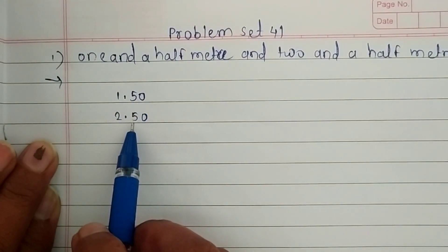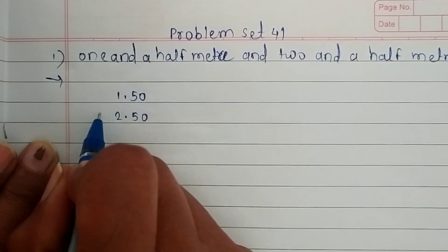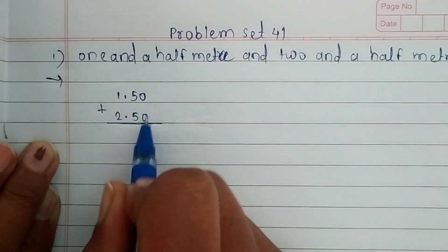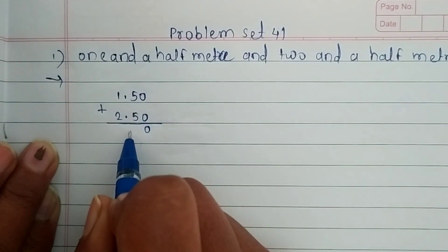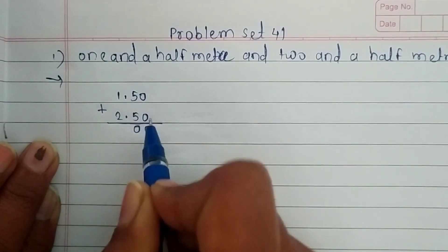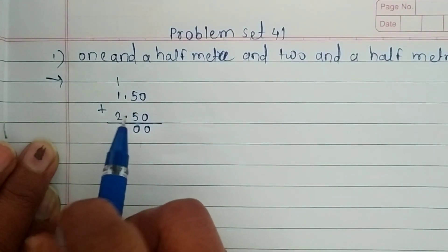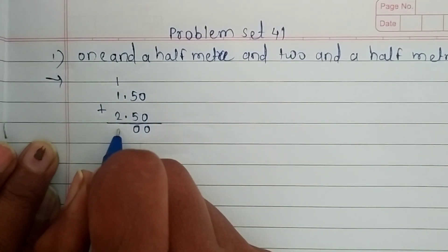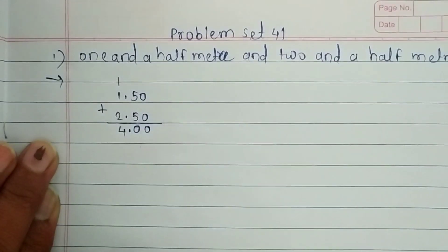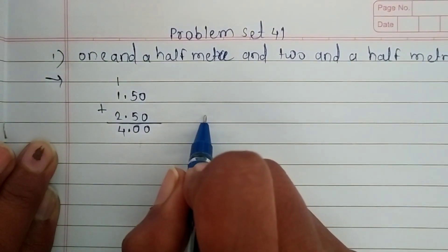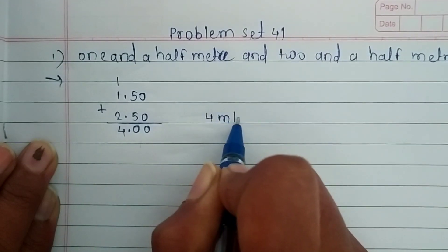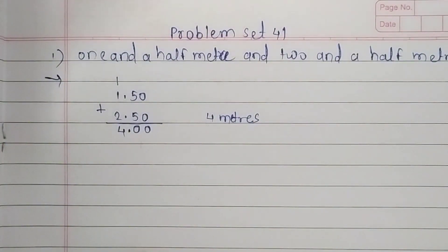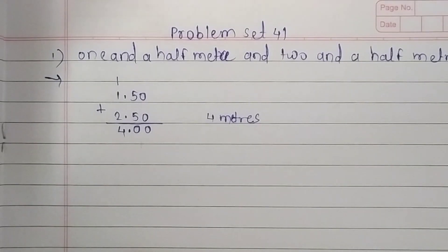One and a half meter is 1.50 and two and a half meters is 2.50. Since both decimal fractions have the same decimal places, we add them. 0 plus 0 is 0, 5 plus 5 is 10 — write 0 and carry 1. Then 1 plus 2 plus 1 is 4, and place the decimal point. The answer is 4 meters.